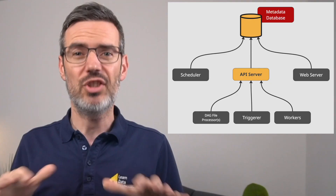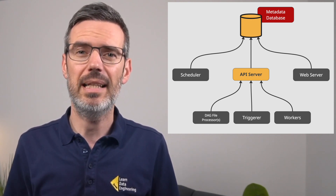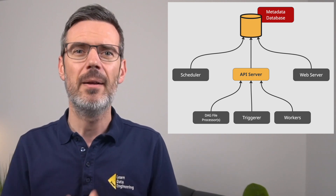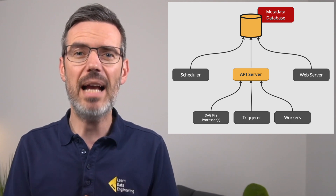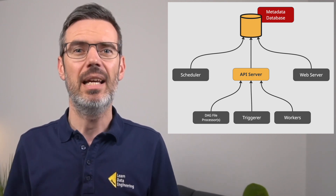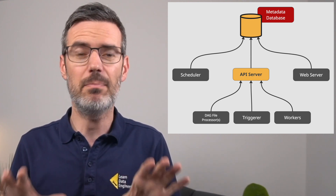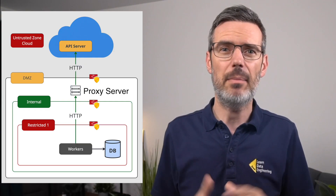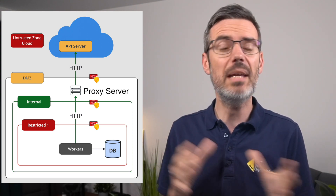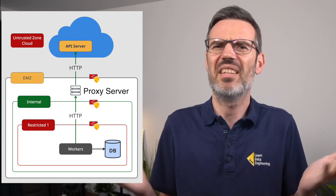Airflow 3.0 solves this by introducing a new central API server. The scheduler and UI still talk directly to the metadata database, but workers, DAG processors, and triggers no longer need that direct access. Instead, they communicate with the API server, which acts as the single point of contact, and the API server handles all interactions with the database behind the scenes. You can now run your workers inside a private network and set up a proxy to forward the necessary HTTP traffic to the API server — a much more acceptable pattern in secure environments. This means tasks no longer need database access, making it much easier to connect cloud-based Airflow with private infrastructure.